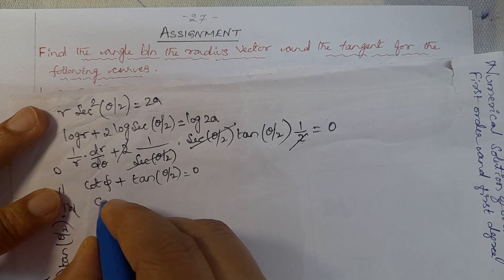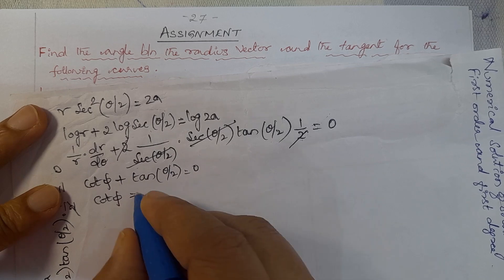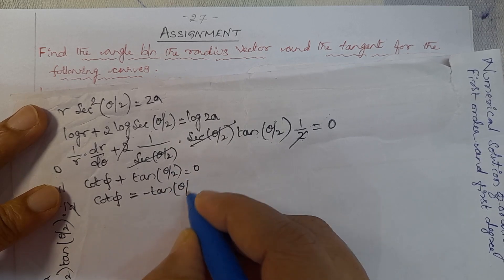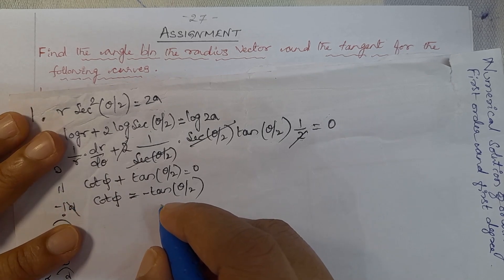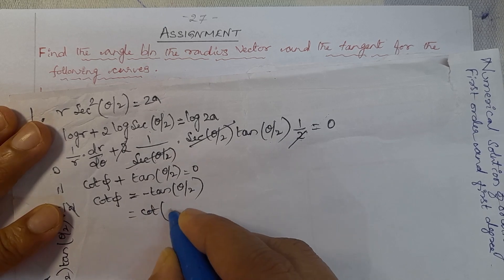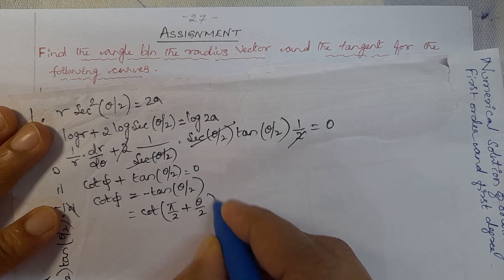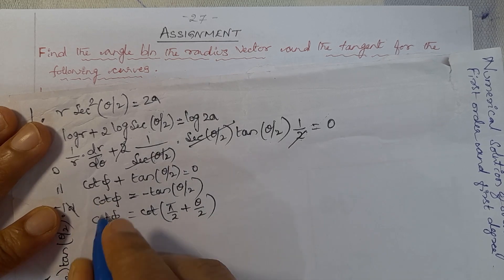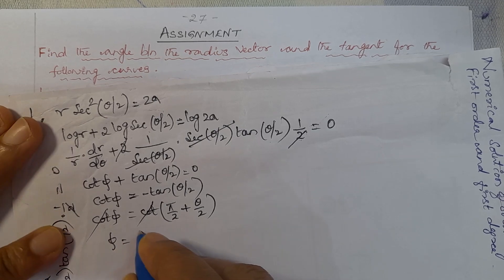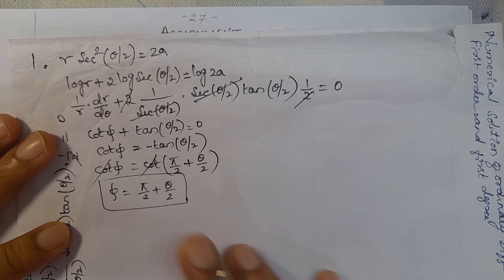Since cot φ = tan(θ/2), shifting tan to the other side gives cot φ = -tan(θ/2), which is negative. This corresponds to the second quadrant: cot(π/2 + θ/2) = -tan(θ/2). So cot φ = cot(π/2 + θ/2), and cancelling cot on both sides gives φ = π/2 + θ/2 as the answer.